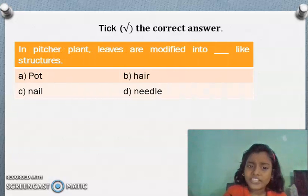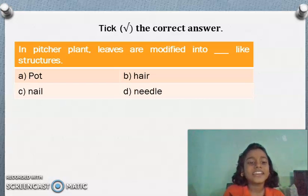In pitcher plant, leaves are modified into dash-like structures, pot-like structures, hair-like structures, nail-like structures, needle-like structures. What's your answer? Yes, pot-like structures. Do you know, pitcher plant is an insectivorous plant or carnivorous plant?